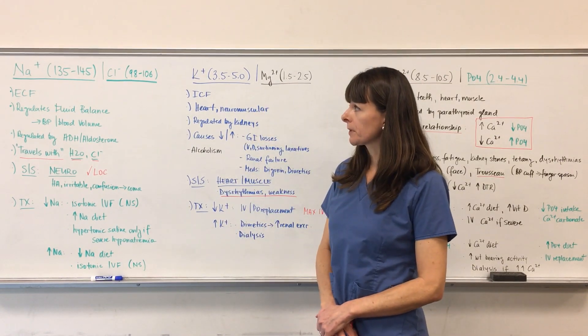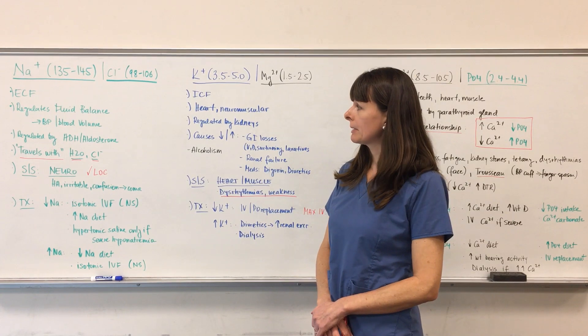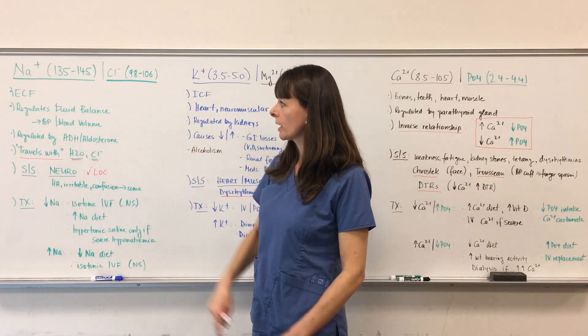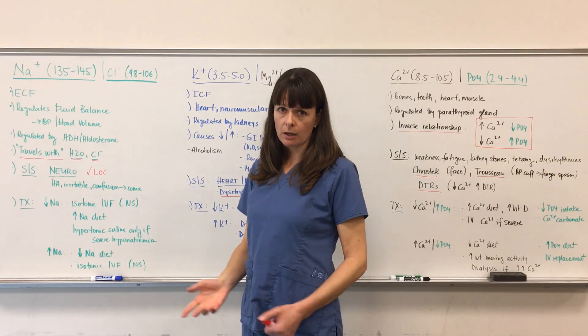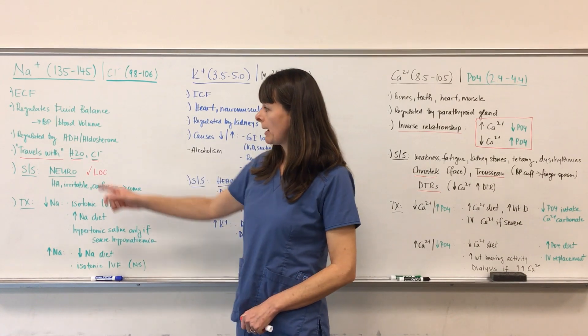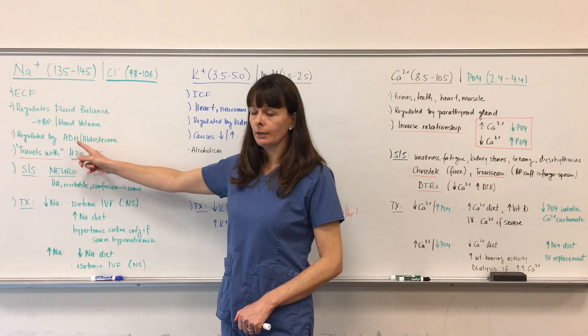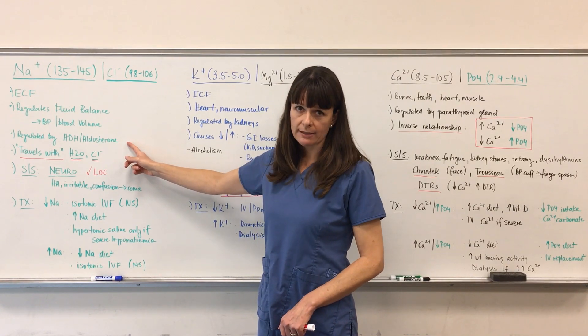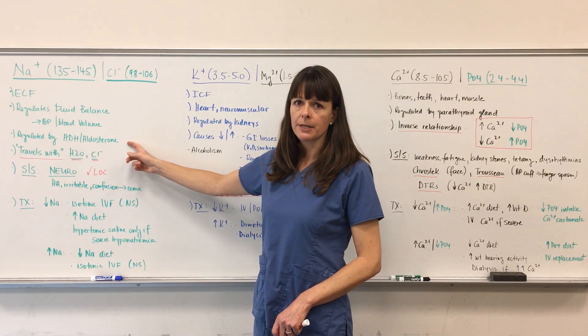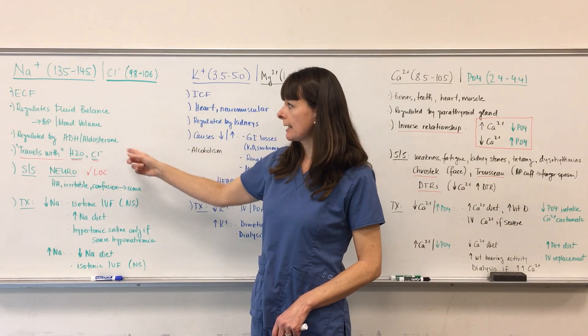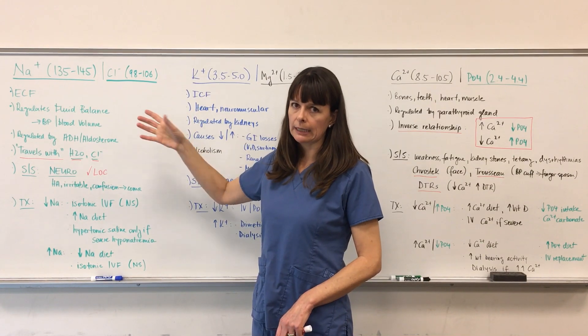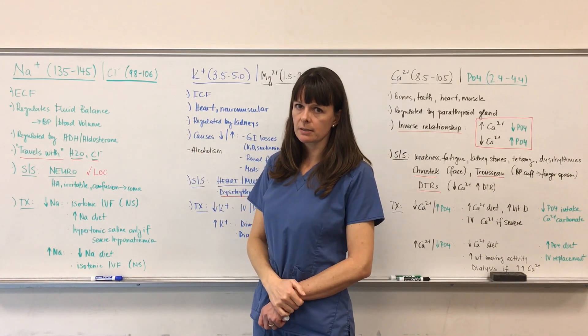Let's start with sodium. Sodium is a major extracellular electrolyte that helps us regulate fluid balance, hence it also helps regulate blood pressure and blood volume. It's regulated by anti-diuretic hormone and aldosterone that pertains to the RAS system. I also have a separate video about the RAS system that you can refer to, to really understand how sodium, fluid balance, and potassium interact in the RAS system.